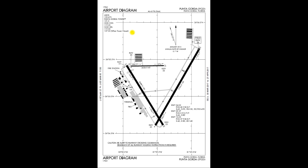This airport diagram is a great thing to have pulled up prior to getting in the airplane, or especially when you're taxiing — either taxiing to take off or after you've landed — because it has all your frequencies right on there. Before you ever get in the airplane, go ahead and brief yourself on what you're going to do. If you know the winds are out of the northeast and you're going to be using Runway 4, you could simply tell yourself you're going to go from the FBO, take Delta over to Runway 4 and hold short.